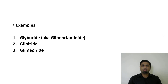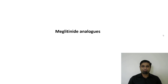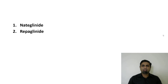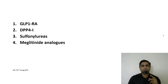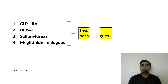The older sulfonylureas especially can cause hypoglycemia, and weight gain of up to 3 kg may be noted. Examples include glyburide (also called glibenclamide), glipizide, and glimepiride. The meglitinide analogues are very similar to the sulfonylureas and include nateglinide and repaglinide. Excluding the alpha-glucosidase inhibitors, all the other drugs discussed so far — GLP-1 receptor agonists, DPP-4 inhibitors, and potassium channel modulators — stimulate the beta cells to release more insulin and are therefore called insulin secretagogues.